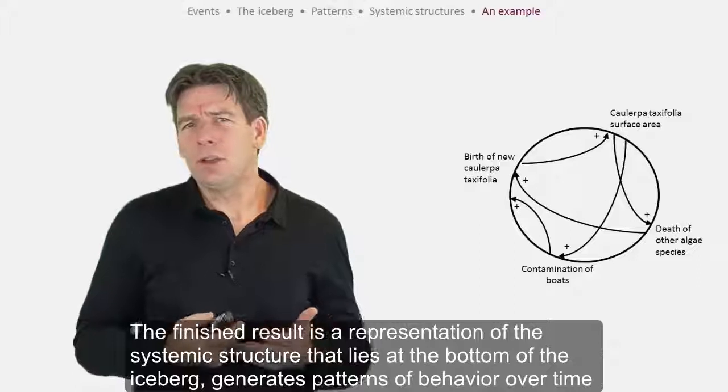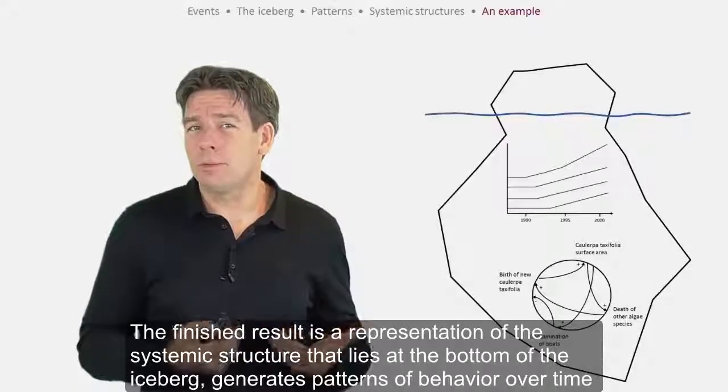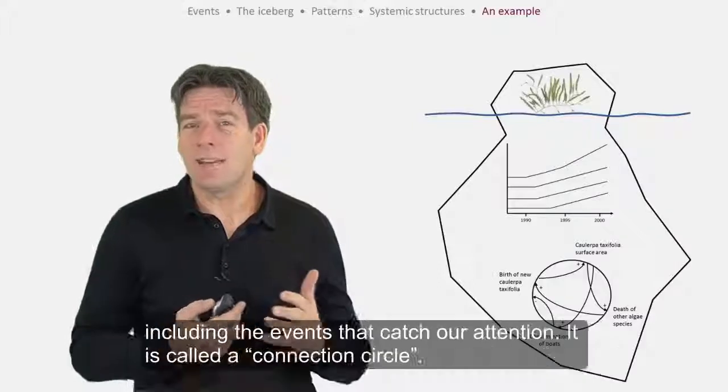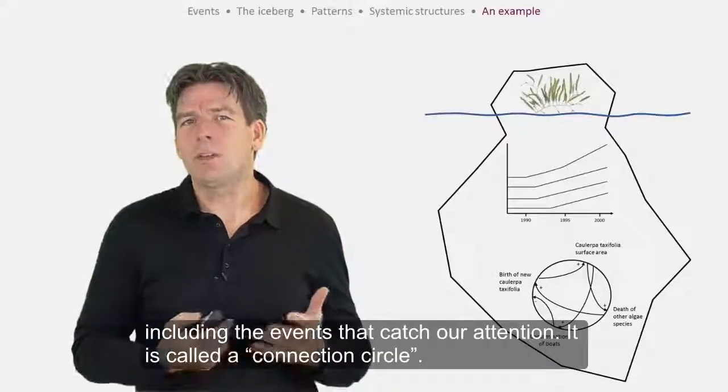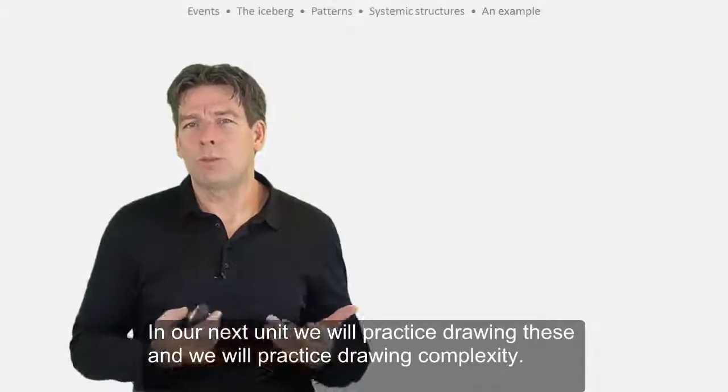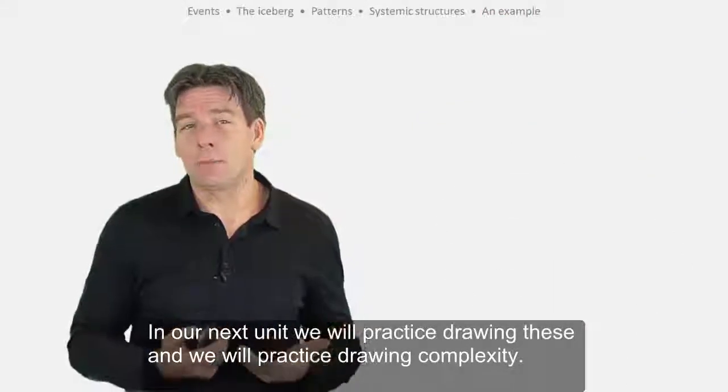The finished result is a representation of the systemic structure that lies at the bottom of the iceberg, generates patterns of behavior over time, including the events that catch our attention. It is called a connection circle. In our next unit, we'll practice drawing these and we'll practice drawing complexity.